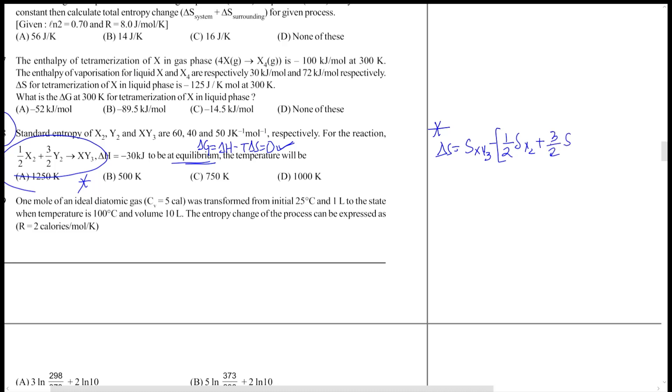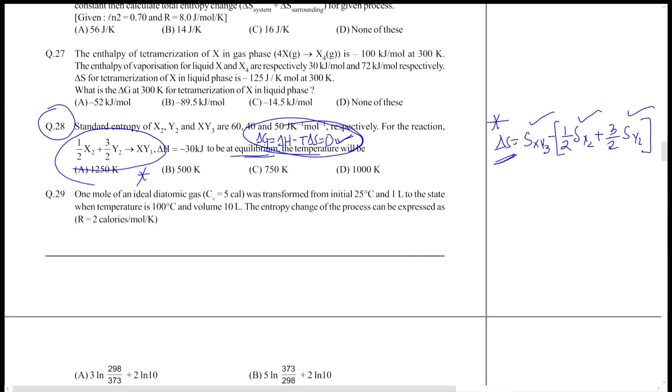These are values which are given to you, so delta S can be evaluated. Use it in the equation delta G equals delta H minus T delta S. That will give you the temperature that is required.